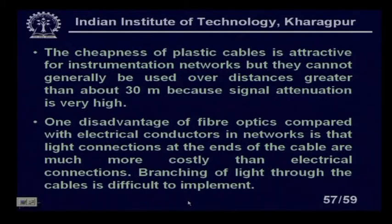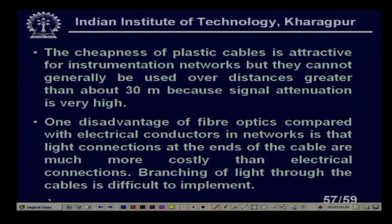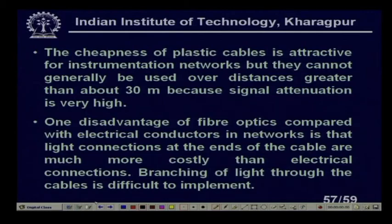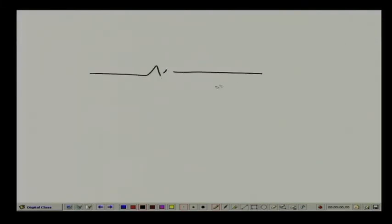One disadvantage of fiber optic compared with electrical conductors in networks is that light connections at the ends of cables are much more costly than electrical connections, and branching of light through cables is more difficult — unlike electrical circuits where you can easily branch or tap off at any point.